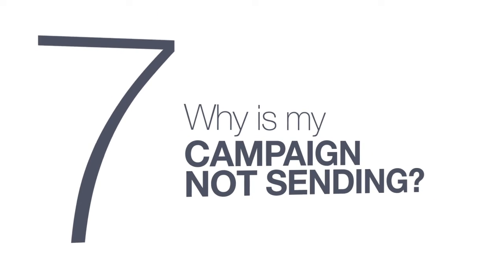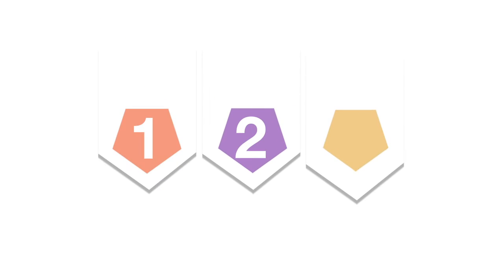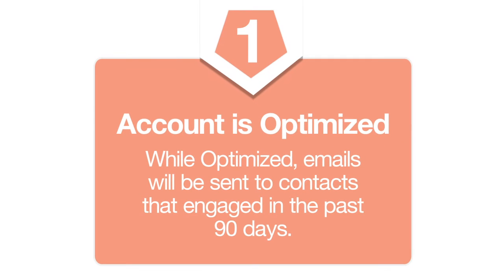Question number 7. Why is my newsletter campaign not sending? There may be several reasons for this. 1. Your account may have been optimized. If your contacts in the list have not been engaging with you within the 90-day period, your email will send to zero recipients. When your account is optimized, you would only be sending to contacts who have actively engaged with you within that period.